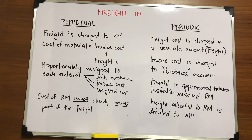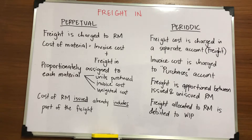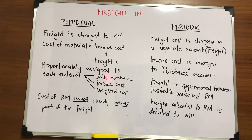Sometimes there are a lot of raw materials delivered in one delivery, meaning different types of materials in a single delivery. So you have to apportion the freight according to each material. There are three types: first by units purchased, second by invoice cost, and third by weighted cost.